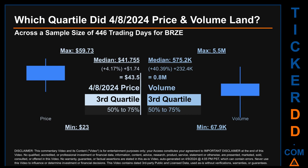Hello, my name is Maria. Which quartile did April 8, 2024 price and volume land in across a sample size of 446 trading days? The maximum end-of-day price for BRZE was $59.73, while the minimum was $23. Within that range, the April 8, 2024 price of $43.50 landed within the third quartile — placing it within the 50 to 75 percent range of all sampled end-of-day prices. The day's volume also landed within the third quartile, that is within the 50 to 75 percent range of all sampled daily volume, which saw a max of 5.5 million and a minimum of 67.9 thousand. Quartiles tell us about the spread of a data set by breaking it into quarters, just like how the median breaks the set into half.